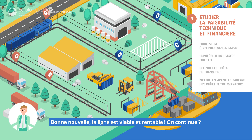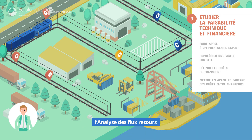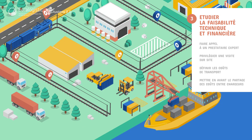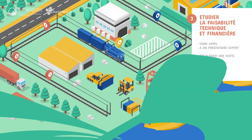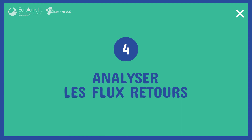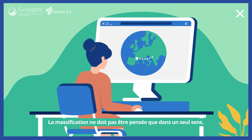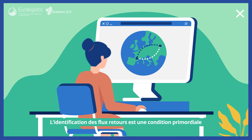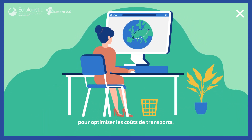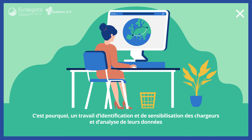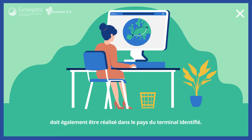Bonne nouvelle ! La ligne est viable et rentable. Voyons ce qui se passe à l'étape 4 : l'analyse des flux-retours. La massification ne doit pas être pensée que dans un seul sens. L'identification des flux-retours est une condition primordiale pour optimiser les coûts de transport. C'est pourquoi un travail d'identification et de sensibilisation des chargeurs et d'analyse de leurs données doit également être réalisé dans le périmètre du terminal identifié.